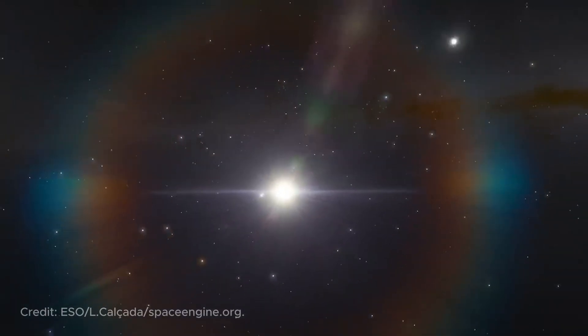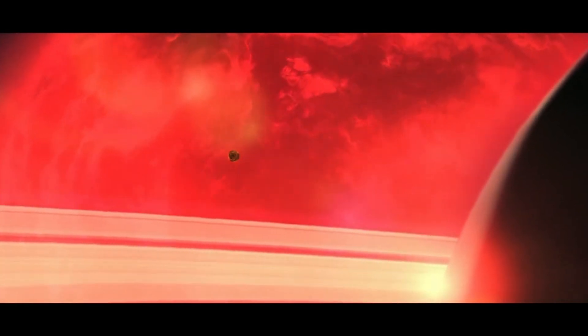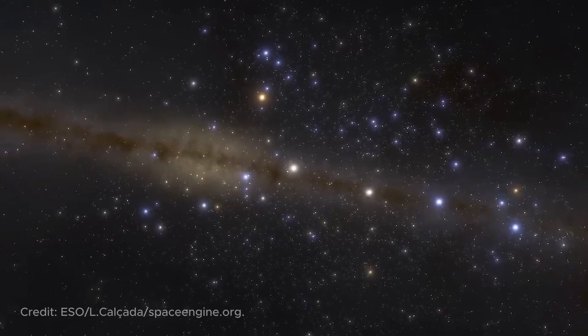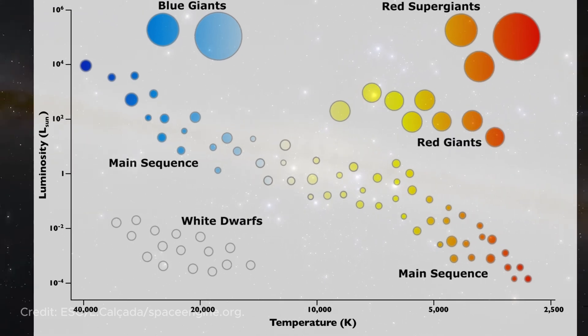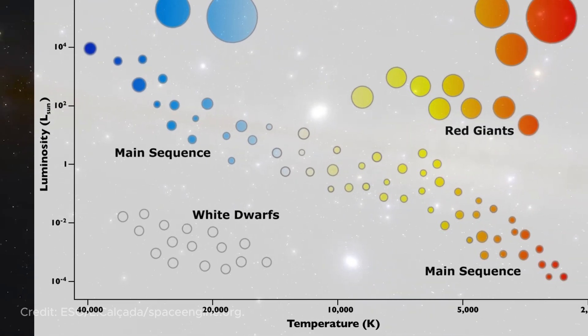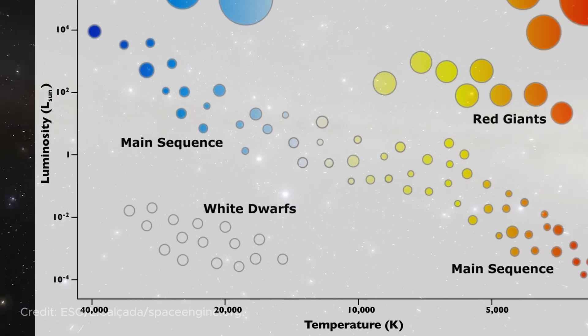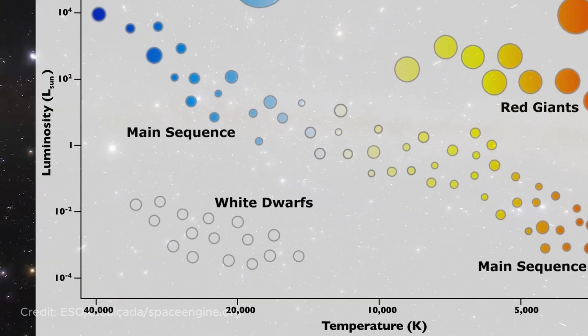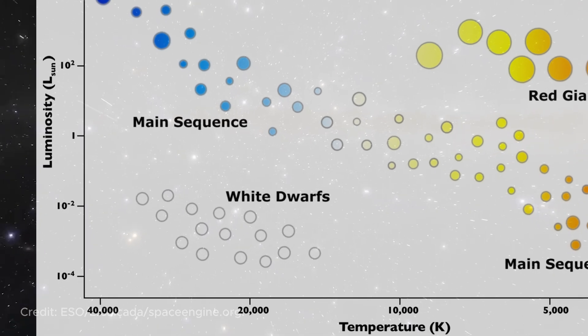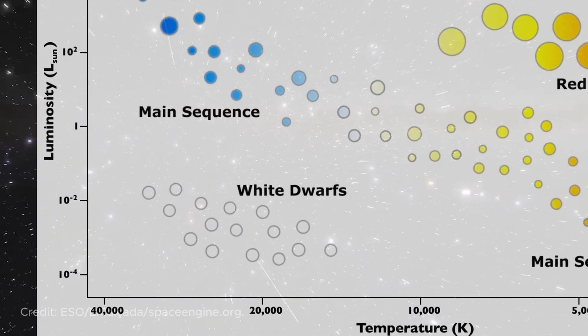Giants and supergiants are cold stars that are much brighter than main sequence stars of the same temperature. One square centimeter of the surface of a cold star emits relatively little energy per second; however, the high overall luminosity is explained by its large surface area. Giants are stars whose diameter is more than 200 times the diameter of the Sun. In contrast, hot stars with low luminosity in the lower left of the diagram must be small in size.